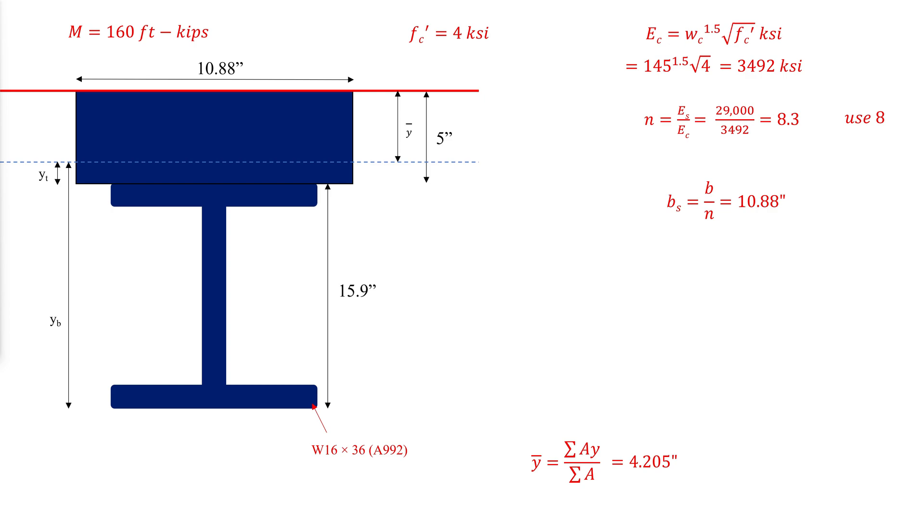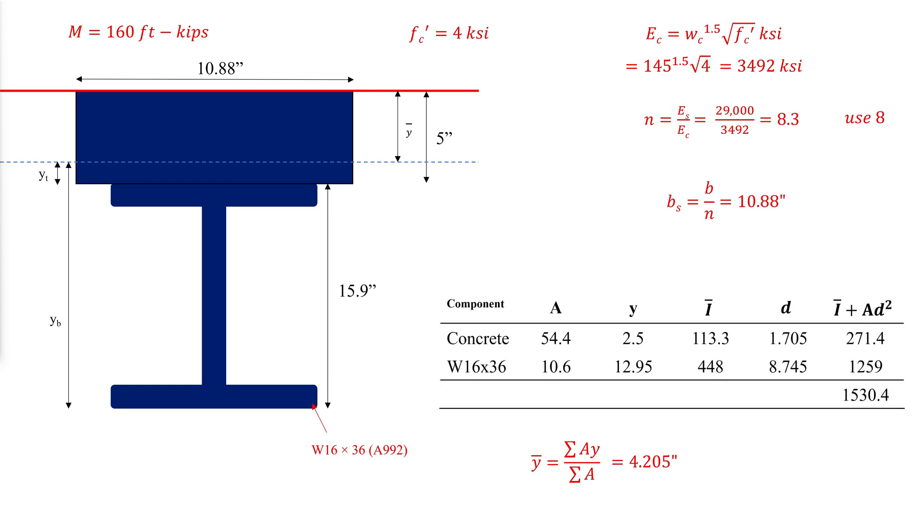And D is the distance of the centers of the areas to the neutral axis. We then obtain the moment of inertia of the section using the parallel axis theorem as 1530.4 inches to the power of 4.